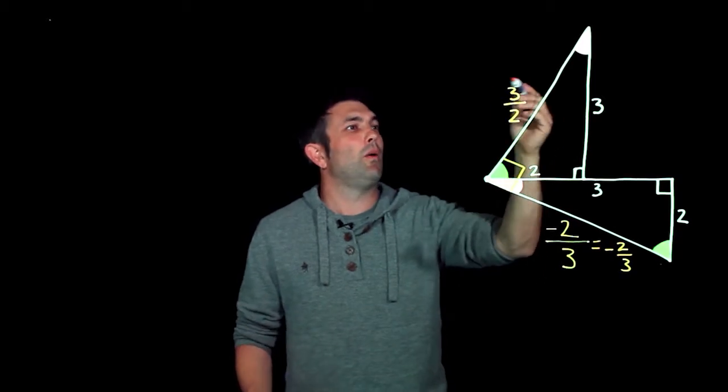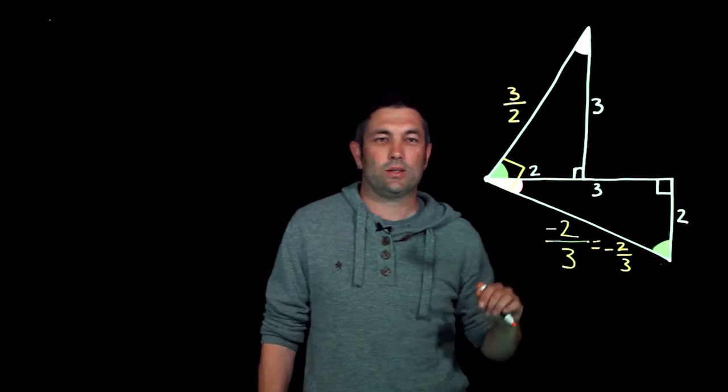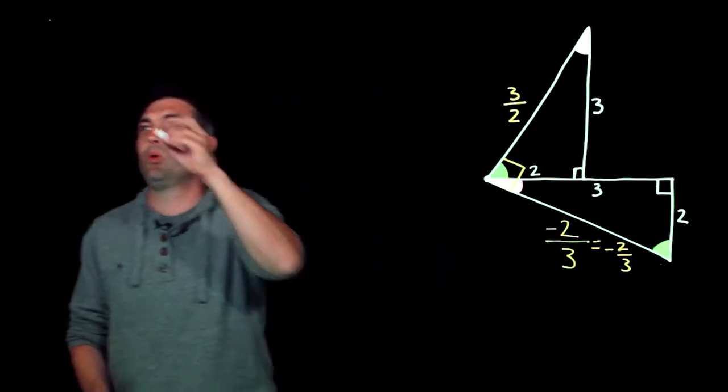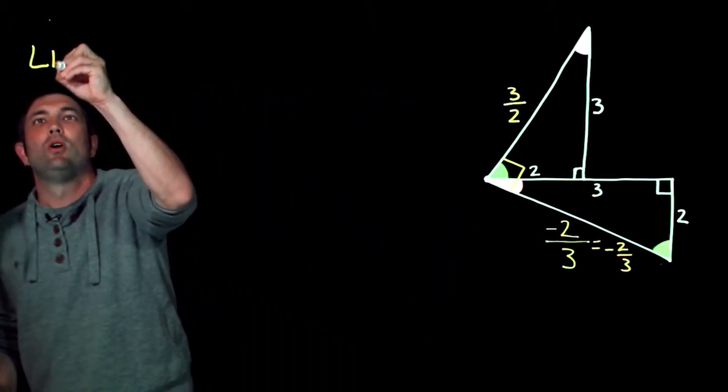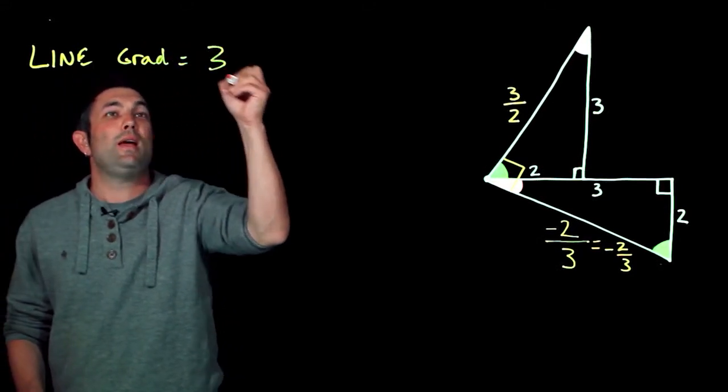And all that's saying is that once you've got one and it's a fraction, turn it upside down and change the sign. So if I show you another example: if I have a line whose gradient is say 3...